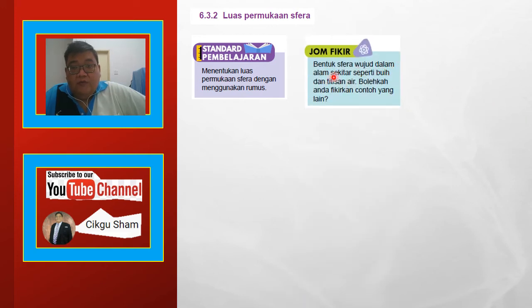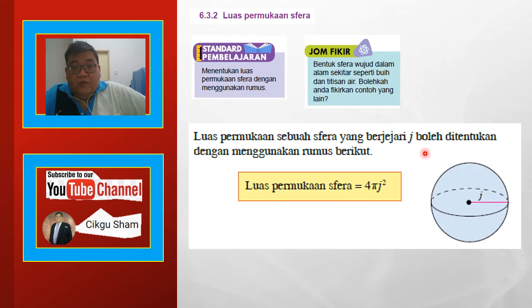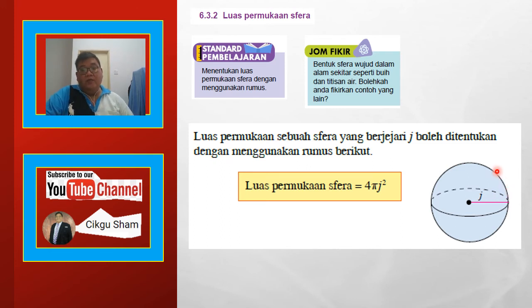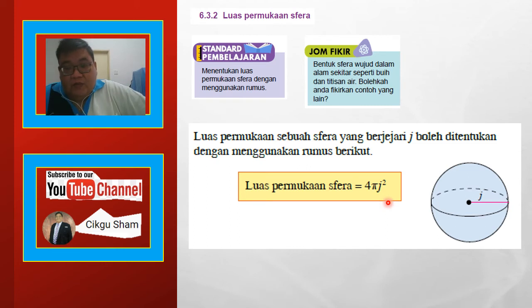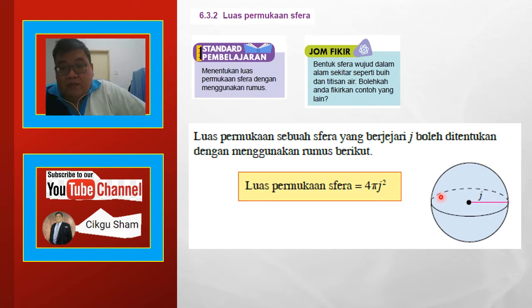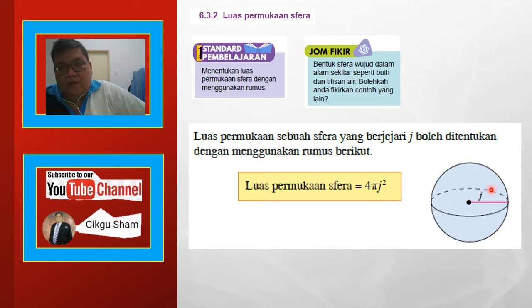Jom fikir — bentuk sfera wujud dalam alam sekitar seperti buah dan titisan air. Bolehkah anda fikirkan contoh yang lain? Sebab sfera ni agak sukar kita nak buat bentangannya. Contoh macam bola sepak — anak-anak nak buka kulit dia nak bentangkan, apakah bentuk dia? Agak susah.